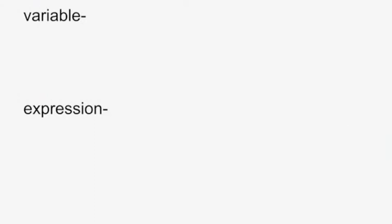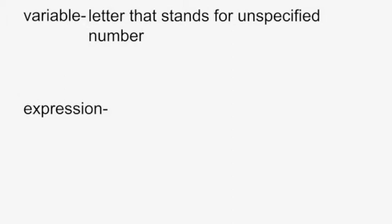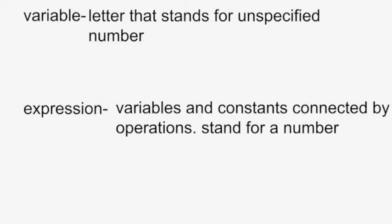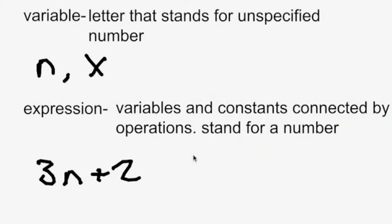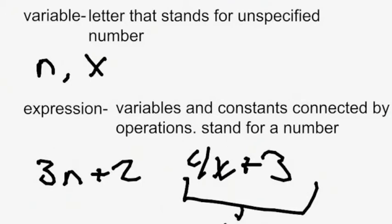Chapter 1.3 is on variables and expressions. A variable is a letter that stands for an unspecified number from a given set — unless told otherwise, the domain is all real numbers. An expression is variables and constants connected by operations, and it stands for an unspecified number. For example, a variable could be n or x, and an expression would be 3n plus 2 or 4x plus 3.